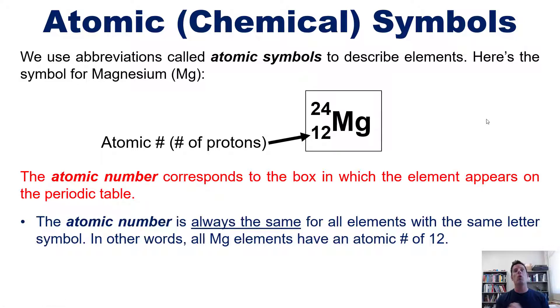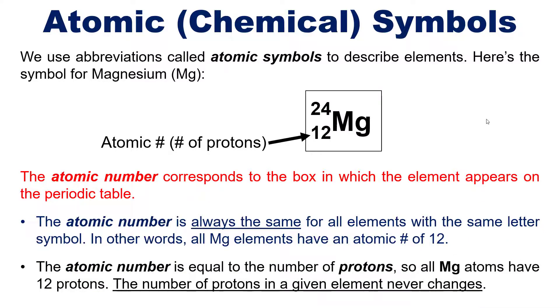The atomic number is always the same for all elements with the same letter symbol. In other words, all magnesium atoms have an atomic number of 12. The atomic number is also equal to the number of protons, which means all magnesium atoms have 12 protons. The number of protons in a given element never changes. If I changed the number of protons, I would actually change the element to a different element, which is mighty difficult to do and does not normally happen.